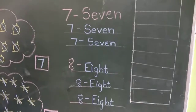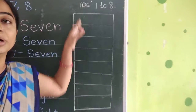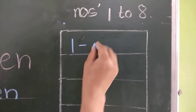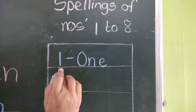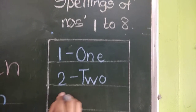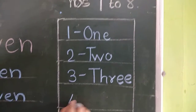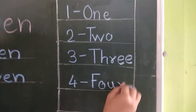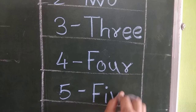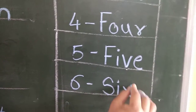So students, you should learn the numbers and their spellings. Now we will see the spellings of numbers 1 to 8 sequentially. Say after me: O-N-E, 1. T-W-O, 2. T-H-R-E-E, 3. F-O-U-R, 4. F-I-V-E, 5. S-I-X, 6.